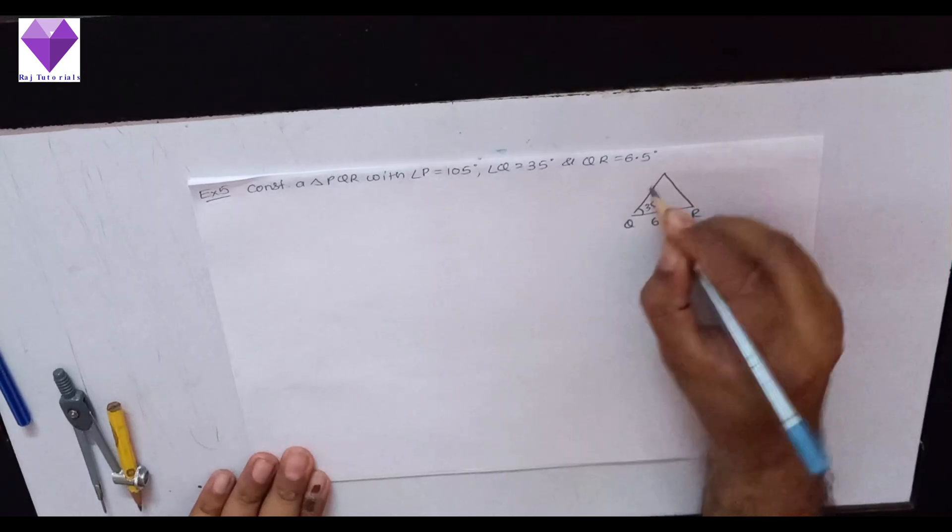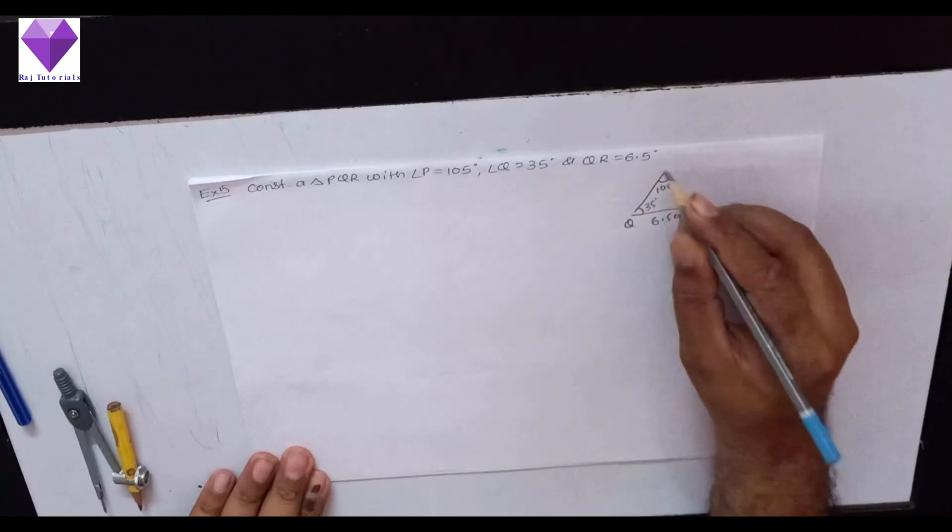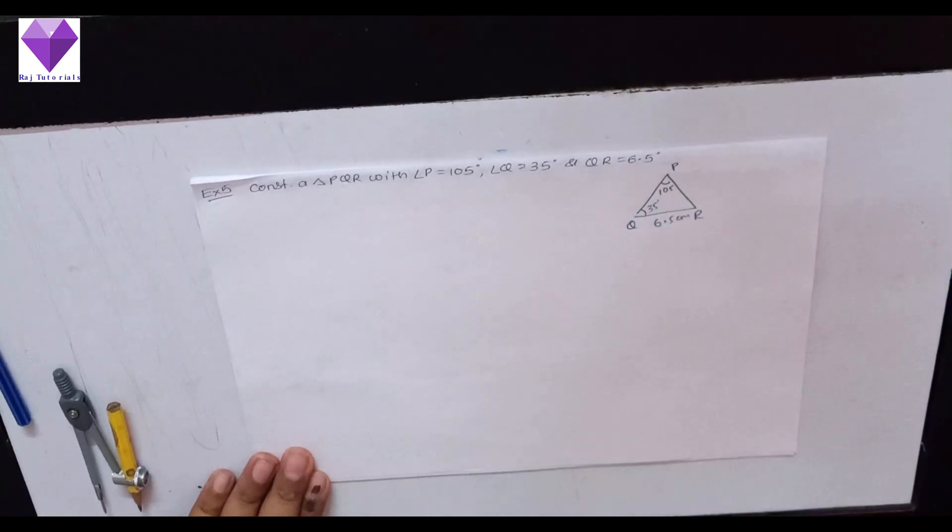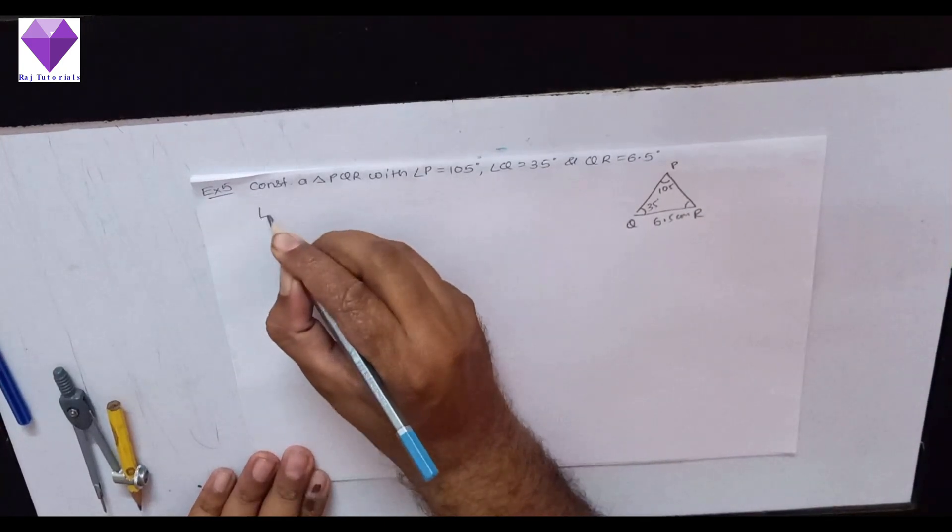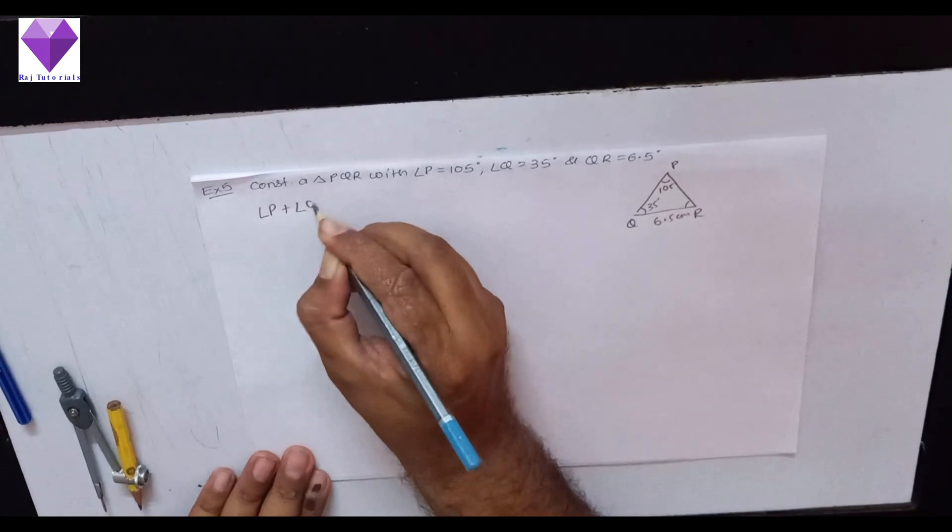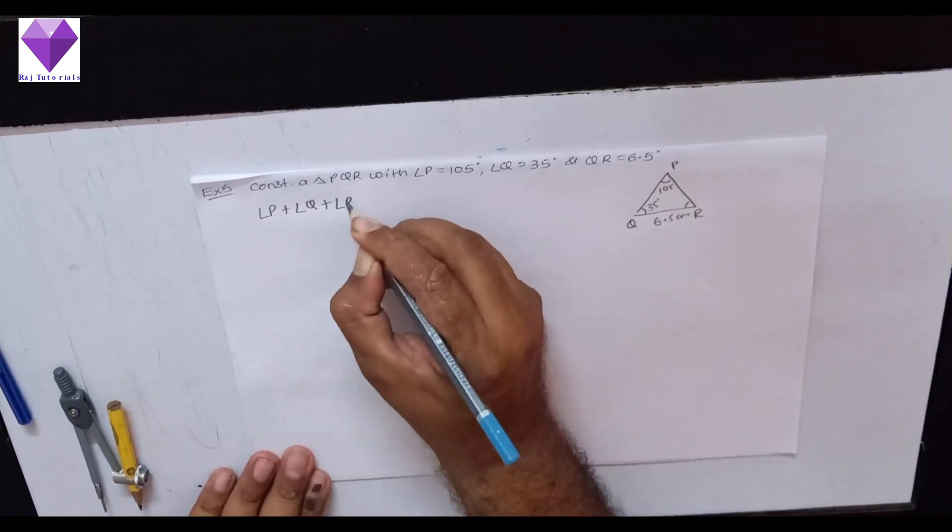So, first of all, I am given two angles and one side, so I don't know this angle R. But we know that angle P plus angle Q plus angle R equal to 180 degrees.